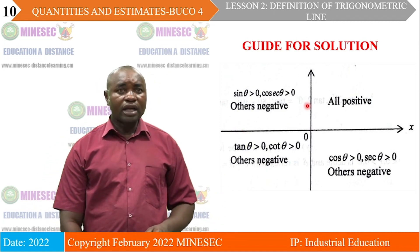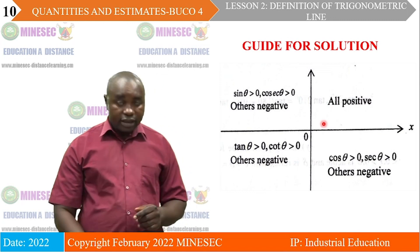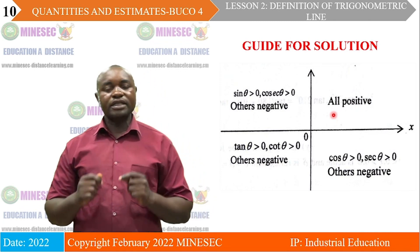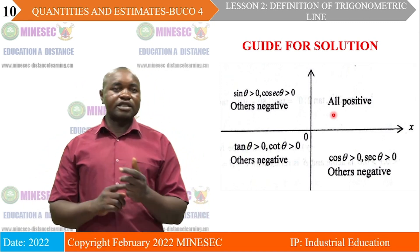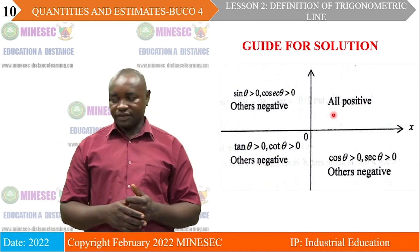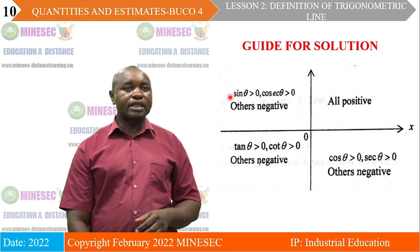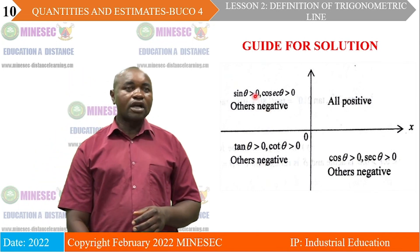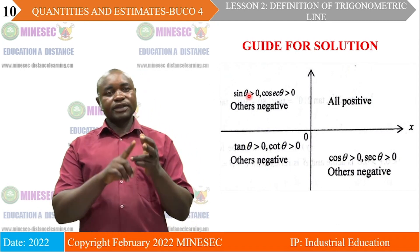In the first quadrant, all trigonometric ratios that we use in quantity and estimate are positive — that is, sine is positive, cosine is positive, and tangent is positive. In the second quadrant, sine is greater than zero and the others are negative, which implies only sine is positive, cosine is negative, and tangent is negative.